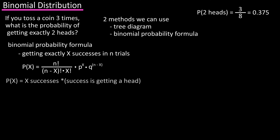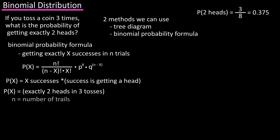Probability of x is the probability of x successes. In our problem, this is the probability of getting two heads in three tosses, so p of x equals two heads. In the formula, n equals the number of trials, and in our problem there are three trials, so n equals three. In the formula, x equals the number of successes, and in the problem we're looking for two successes, so x equals two.